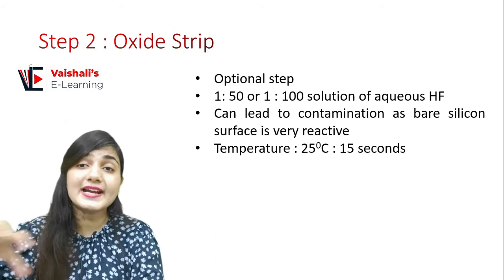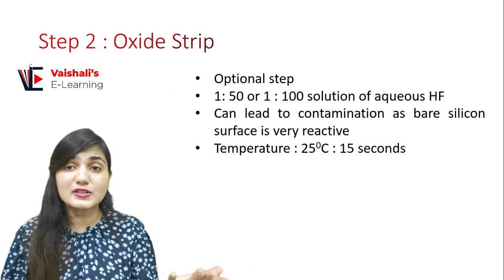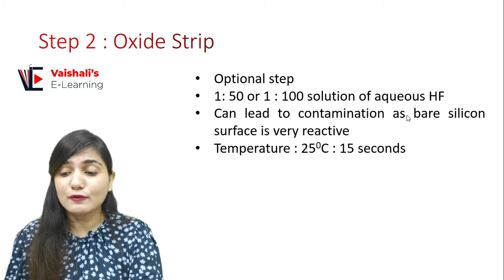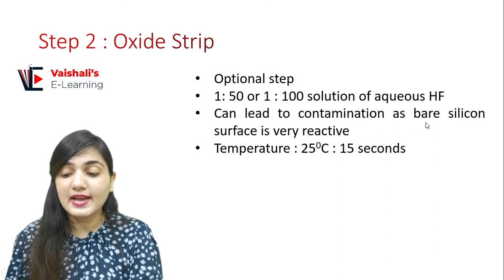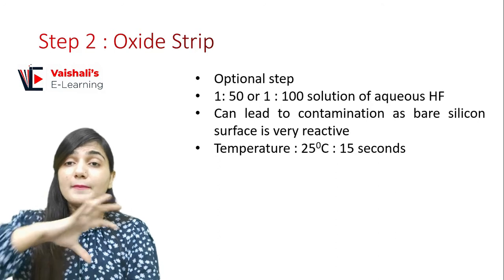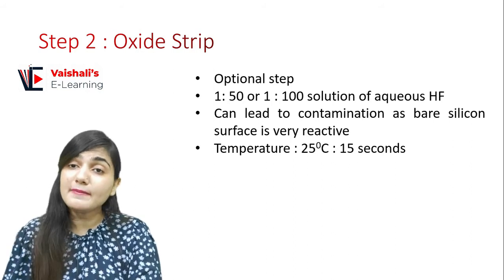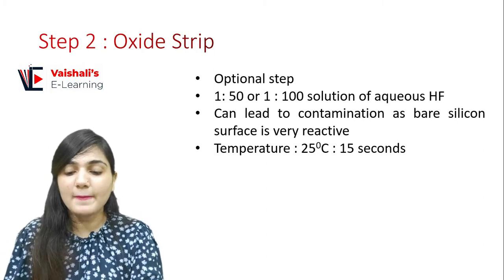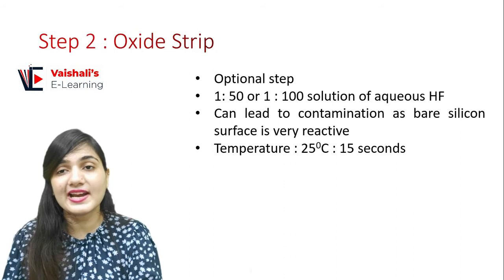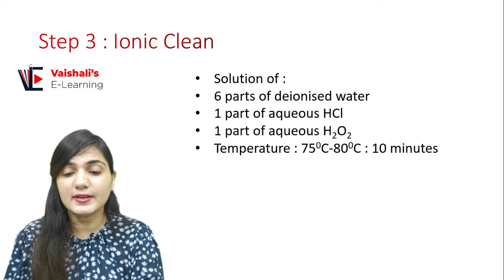Step 2 is oxide layer removal, which is an optional step. If there is no oxide layer on the wafer, skip this step. Here we use a 1:50 or 1:100 solution of aqueous hydrofluoric acid at 25 degrees Celsius. The wafer is dipped into this solution for just 15 seconds, then removed. Note that bare silicon surface is very reactive, so contamination is possible after this step.